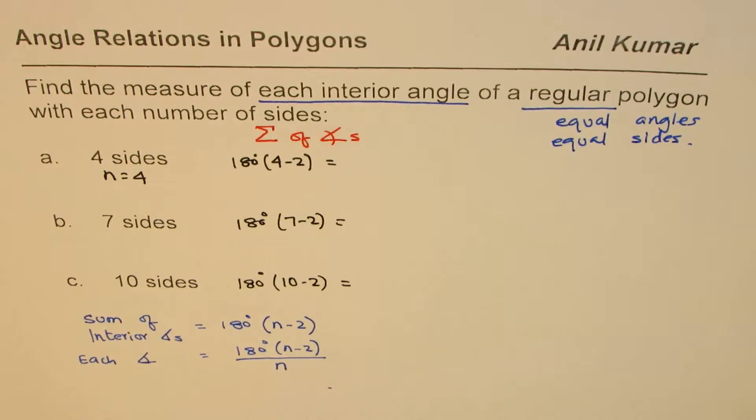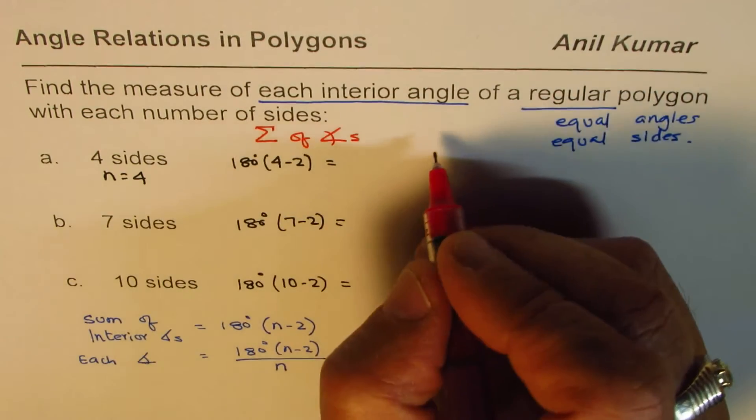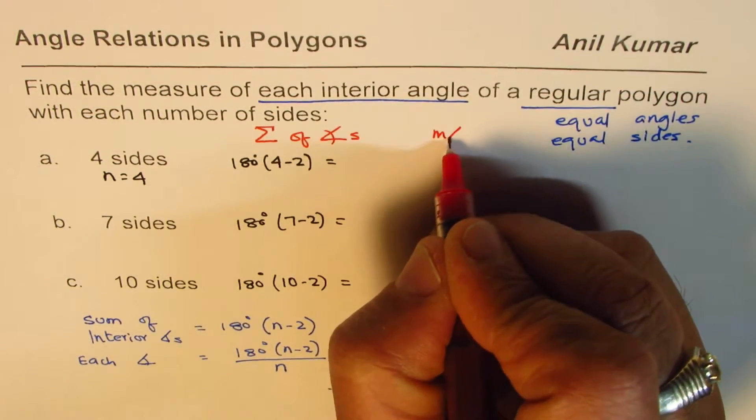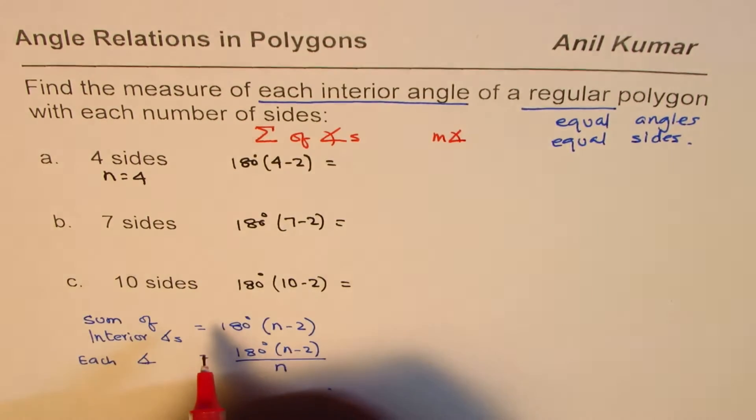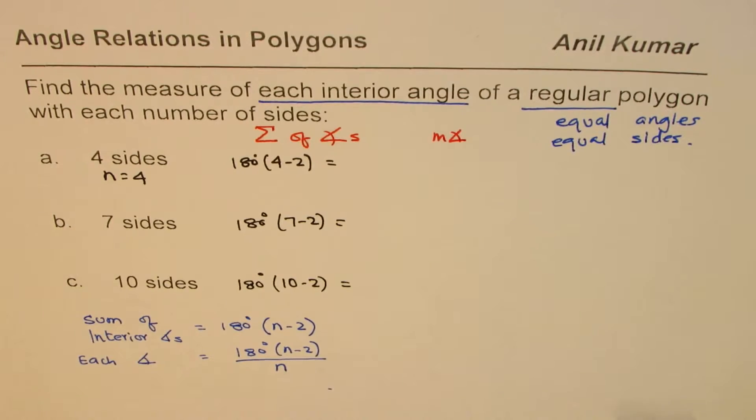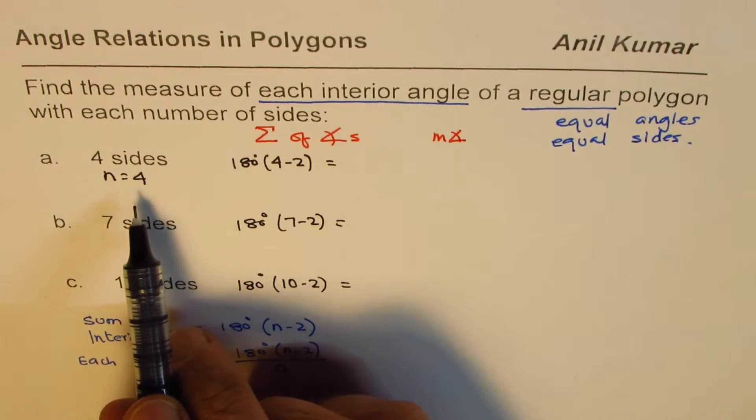So, once you get the sum of angles, you can find measure of each angle. Which will be this sum divided by the number of sides. Number of sides is the same as the number of angles.